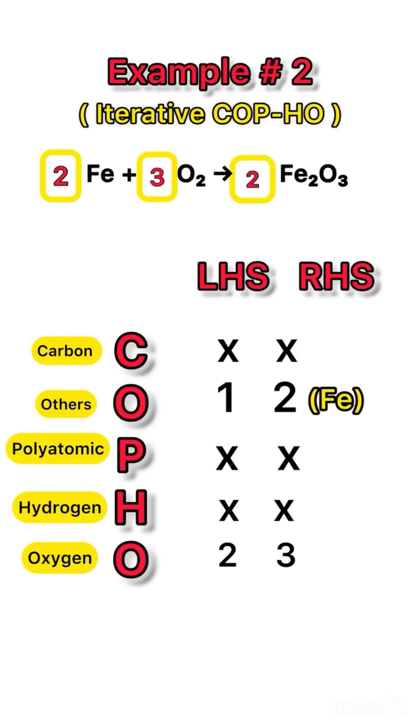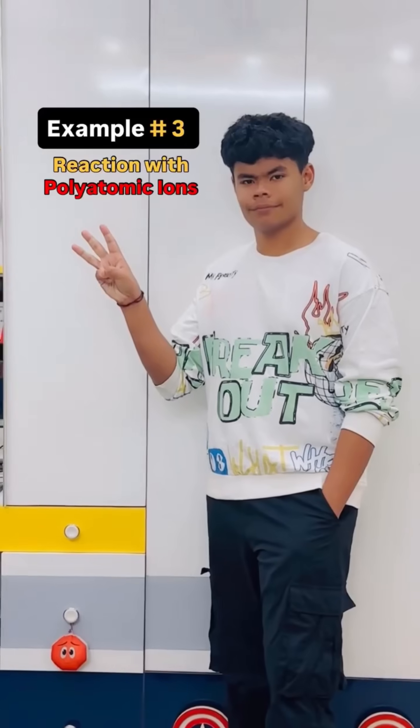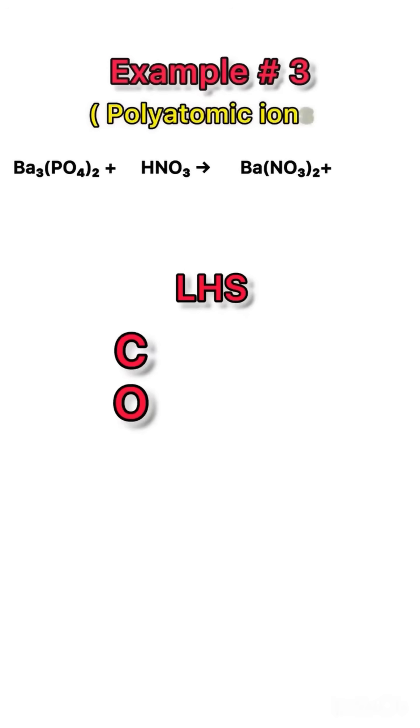Now oxygen is 6 on both sides, but now Fe changed again, so repeat COP-HO to balance Fe again. On the left hand side it's 2 as earlier, but on right hand side it is now 4 because Fe2O3 has 2 Fe and coefficient is 2. So put 4 before Fe on left hand side to balance it. Check oxygen again, it's 6 on both sides. The equation is balanced now.